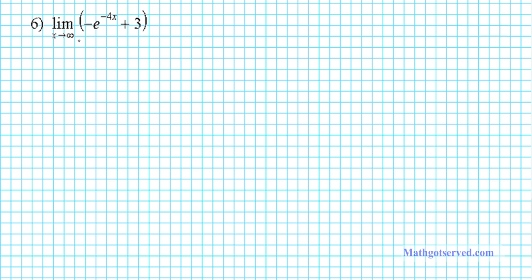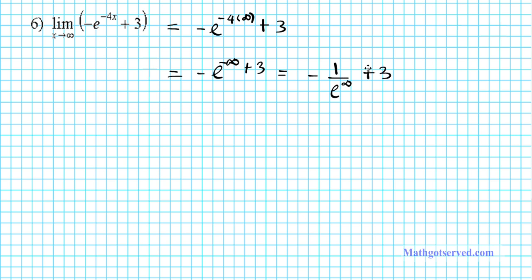Let's take a look at question number 6. We're to find the limit as x approaches infinity of negative e to the negative 4x plus 3. We can evaluate this by direct substitution: negative e to the negative 4 times infinity plus 3, which simplifies to negative e to the negative infinity plus 3. Since the exponent is negative, we reciprocate: negative 1 over e to the infinity plus 3. e to the infinity is infinitely large, so negative 1 over infinity is 0 plus 3, and the final answer is 3.